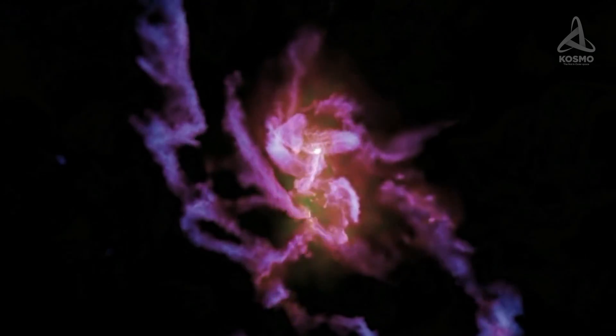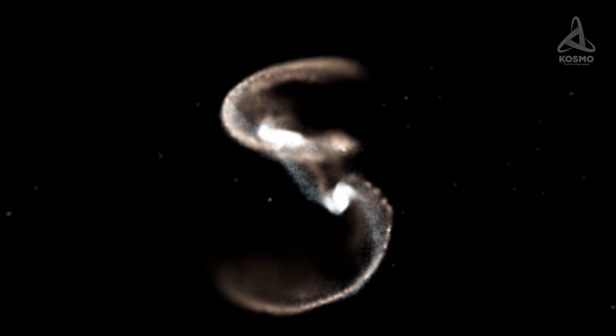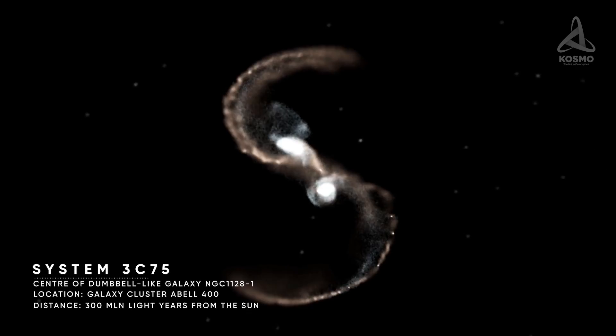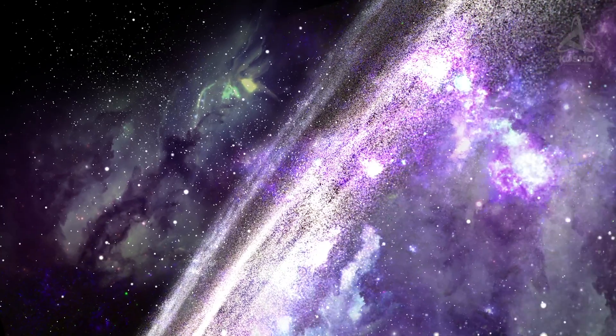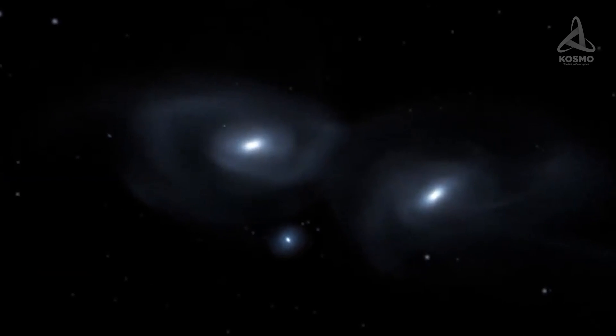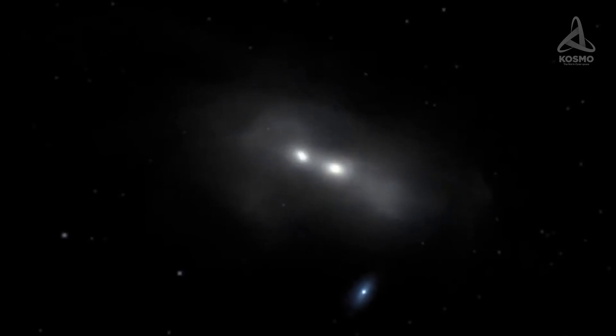In this case, the mass of this binary system will be enormous, and the amounts of energy released on collision are really mind-boggling. A good example of such system is 3C75 in the middle of the dumbbell galaxy NGC 1128. The galaxy lies in the Abell 400 galaxy cluster, approximately 300 million light-years away from the Sun. Its peculiar shape is thought to have formed as a result of two elliptical galaxies merging, with a massive black hole in the middle of both.